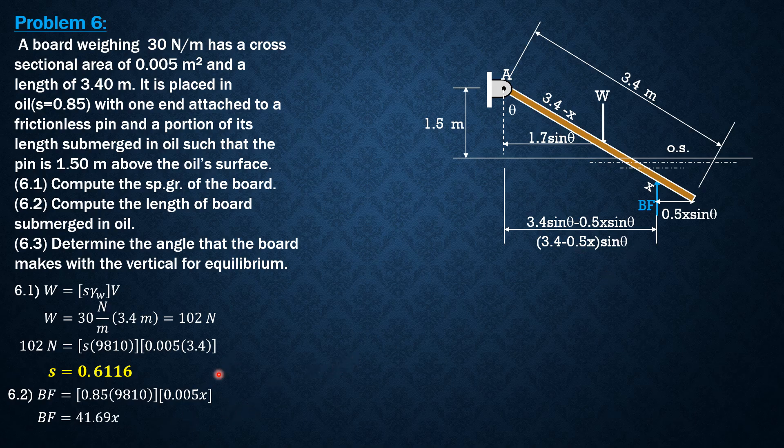To solve for that x, we sum up moments about A equals 0. Take note, we have horizontal and vertical reactions at A. We sum up moments about A so that those reactions are not involved in the moment summations. Summation moment A equals 0 clockwise positive, so clockwise equals counterclockwise moment.